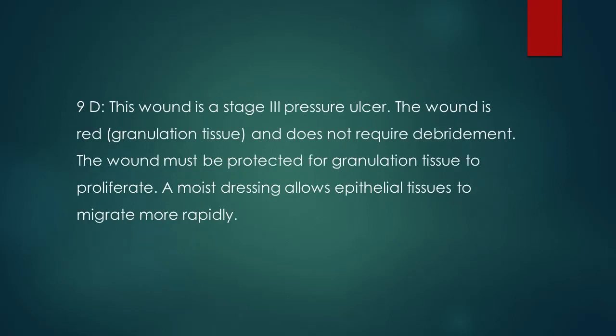Answer: 9D. This wound is a stage 3 pressure ulcer. The wound is red with granulation tissue and does not require debridement. The wound must be protected for granulation tissue to proliferate. A moist dressing allows epithelial tissues to migrate more rapidly.